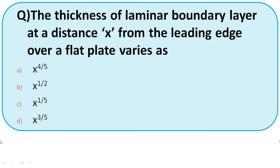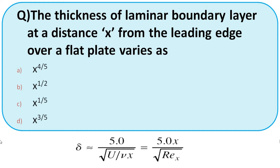The thickness of laminar boundary layer at distance x from the leading edge over a flat plate varies as — a very important question. Recall the formula: δ = 5x/√Re_x. Since Re = ρVD/μ and is proportional to x, the boundary layer thickness is proportional to x^(1/2). The right answer is B.